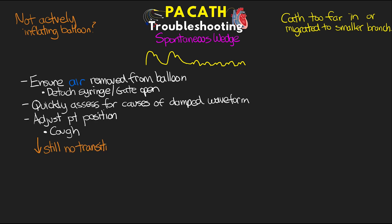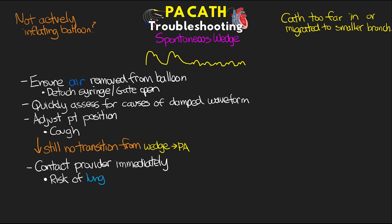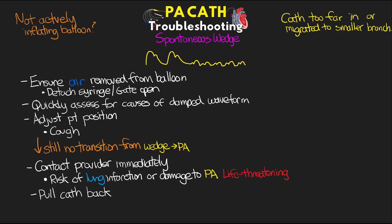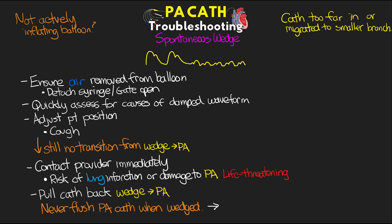If you still don't see a transition from the wedge to the pulmonary artery, then you need to contact the provider immediately. The patient is at risk for lung infarction, as well as damage to the pulmonary artery, which could lead to rupture — a life-threatening situation. Either you or the provider may need to pull the catheter back a little bit until the wedge waveform goes away and the pulmonary artery waveform returns. Remember to never flush a PA catheter when it's wedged, as this is another situation that could lead to rupture of the pulmonary artery.